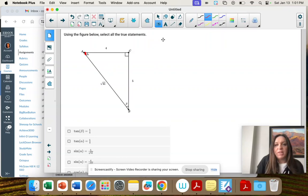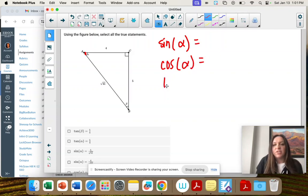Let's start with alpha and find sine of alpha, cosine of alpha, tangent of alpha, because those are all down here. We just have to pick, and then we'll find sine of beta, cosine of beta.